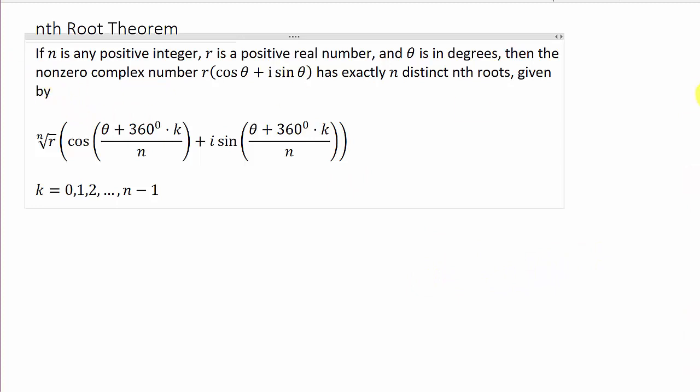Alright, so let's come back over here to the nth root theorem. It says if n is any positive integer, r is a positive real number, and theta is in degrees, then the non-zero complex number r times cosine theta plus i sine theta has exactly n distinct nth roots, given by the nth root of r times the cosine of theta plus 360 times k over n plus i sine theta plus 360 times k over n, where k goes from 0 to n minus 1. I'll explain this more as we're working the examples. I'll explain to you more of what k is and all that stuff.